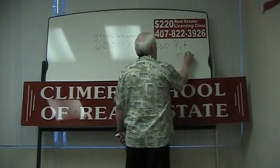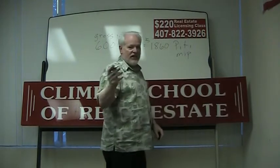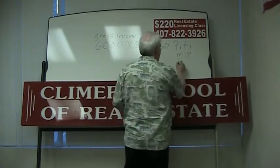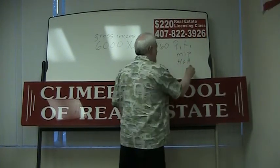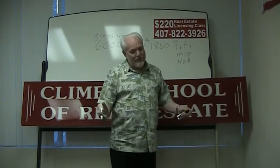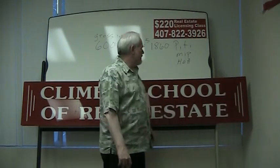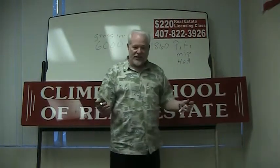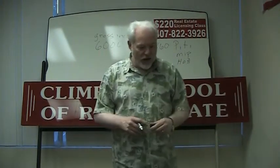There's a thing called MIP, that's a fee you pay to FHA for insuring the mortgage. And about half the houses today have an HOA fee. That may not be included in the payment, but it's included in the arithmetic.